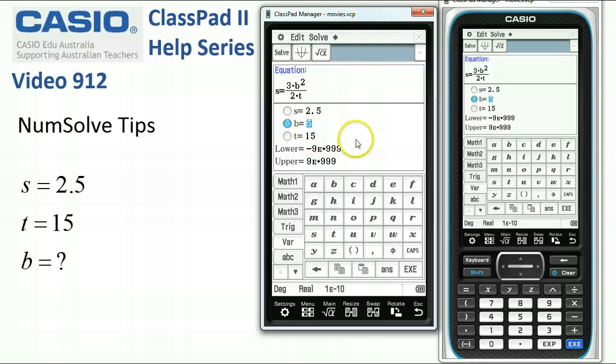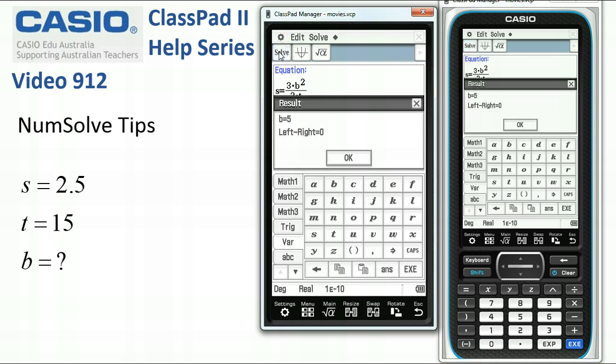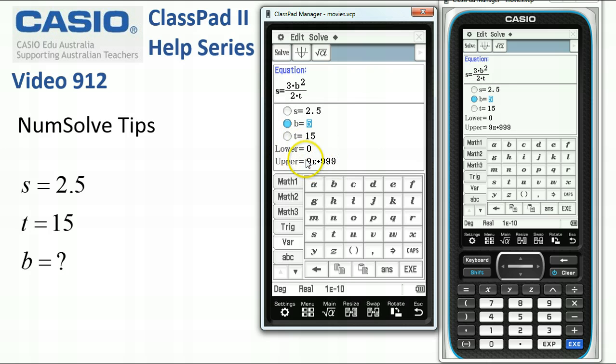So the other thing you can do is, if you know you're only after a negative or a positive solution, change the lower and upper bands here. So if we wanted a positive solution, we could change the lower band to 0. And even if we started off with a negative 100 before we tap solve, ClassPad then says it'll only give you a solution in this range here from 0 to the largest number ClassPad can deal with. So we've got the possible 5 on that one.